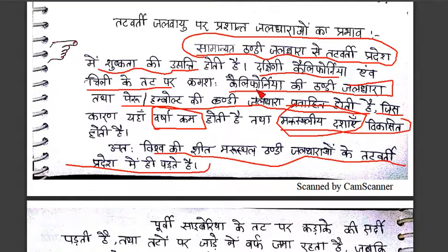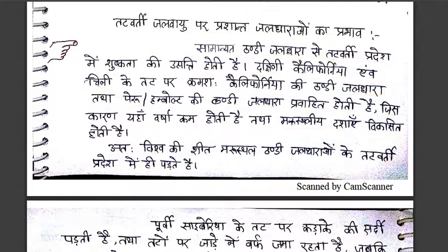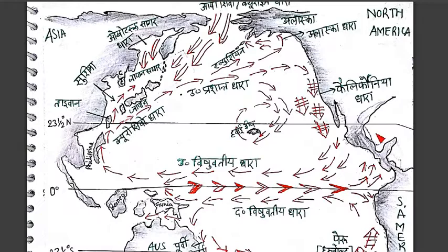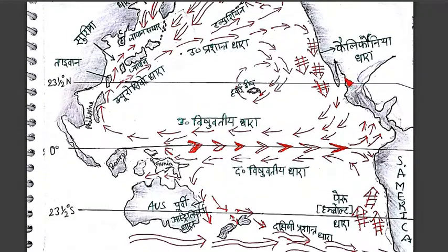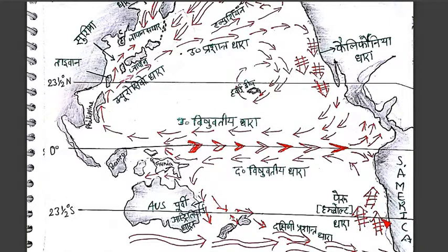Now I will show you a location which we talked about in the previous video. You can see that this is the Uttari Prashant, this is the Dakshini Prashant, this is California — California, Mexico — and this is also in the US. What happened is the Pera or Humboldt current — you can see the weather patterns after that.